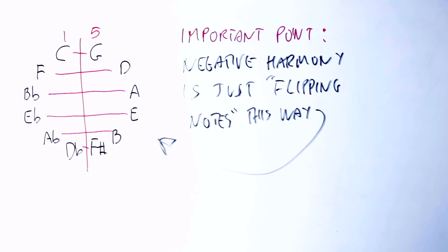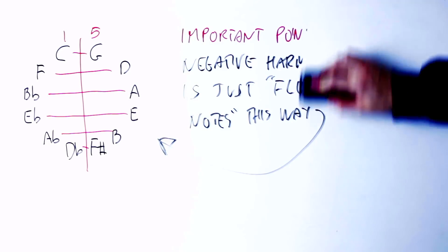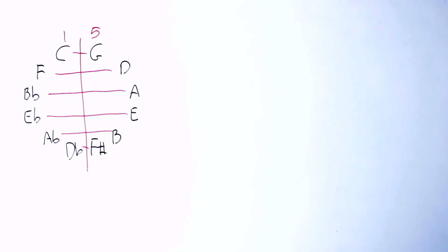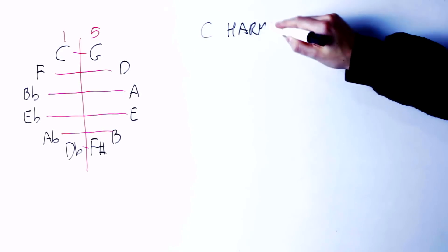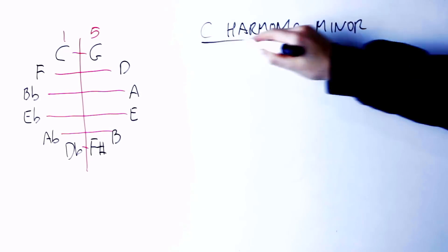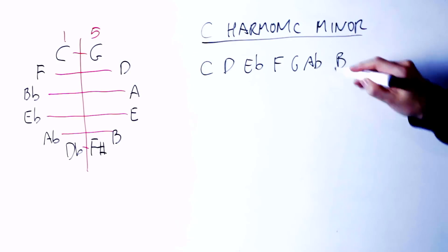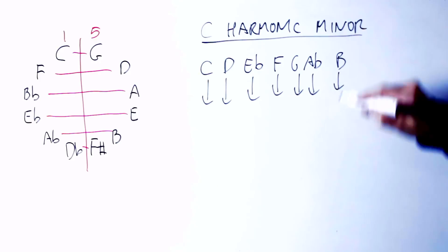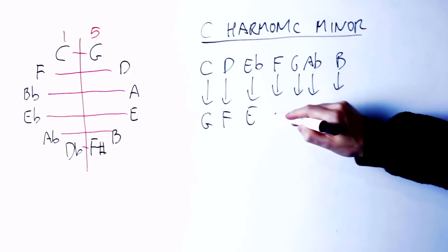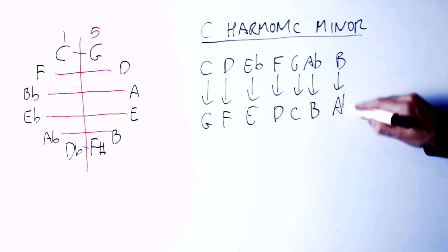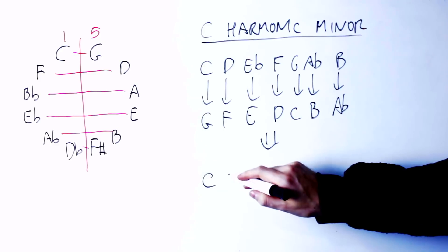So what if we do this, for instance, on the C harmonic minor scale? The C harmonic minor scale is C, D, E flat, F, G, A flat, B. Let's flip around those notes. C becomes G, D becomes F, E flat becomes E, F becomes D, G becomes C, A flat becomes B, and B becomes A flat.